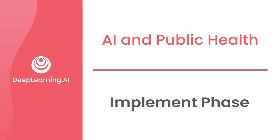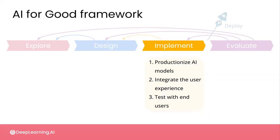Once you've looked at your data and designed your model strategy and your annotation strategy, figured out how you're going to handle data privacy and security and planned your user experience, then you're ready to begin implementing your system. In this phase, you'll get ready for production by running any final training and testing of your model and moving it into a scalable production environment, where you'll be concerned with monitoring your model performance and understanding potential failure modes.